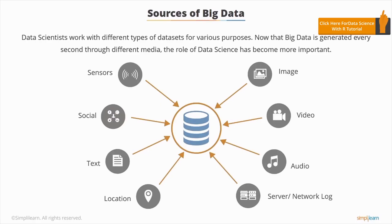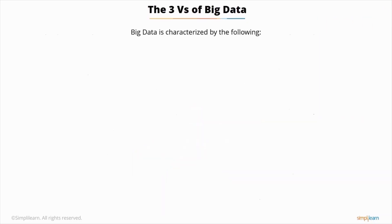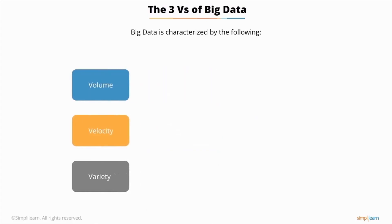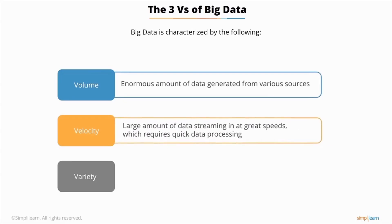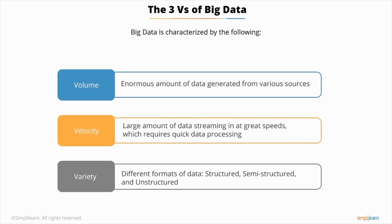Big data is usually referenced by three Vs: volume, velocity, and variety. Volume refers to the enormous amount of data generated from various sources. Big data is also characterized by velocity — huge amounts of data flow at a tremendous speed from different devices, sensors, and applications, requiring efficient and timely data processing. Variety is the third V of big data, because big data can be categorized into different formats like structured, semi-structured, and unstructured.